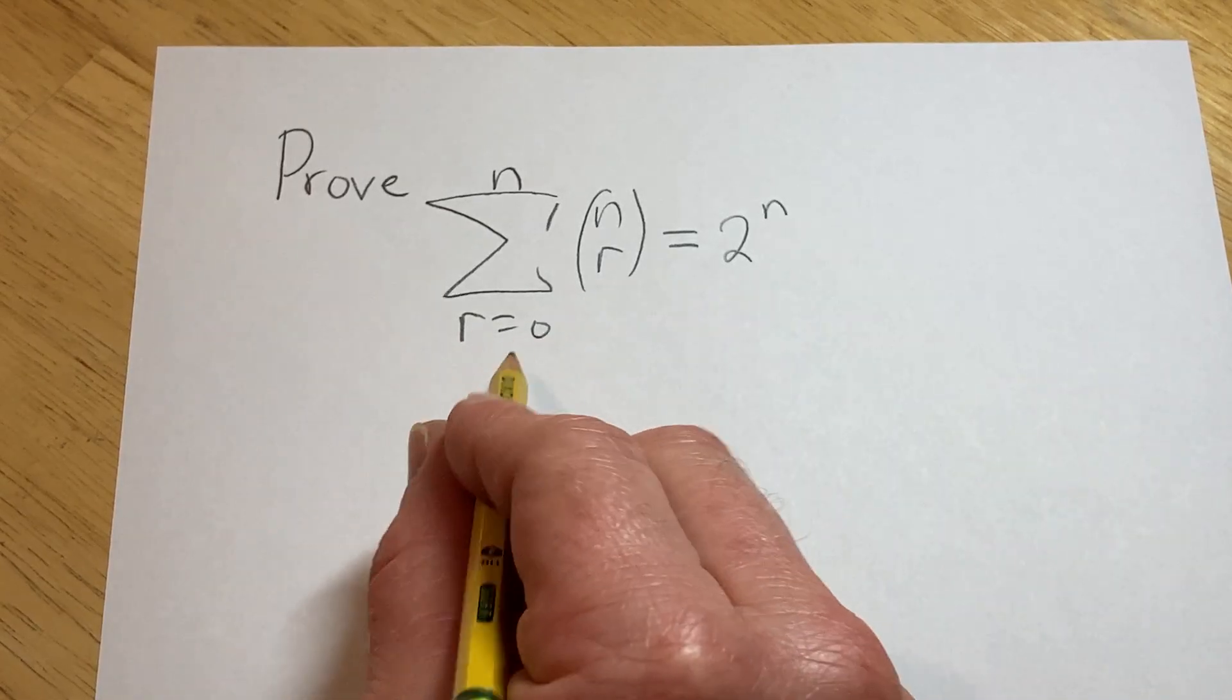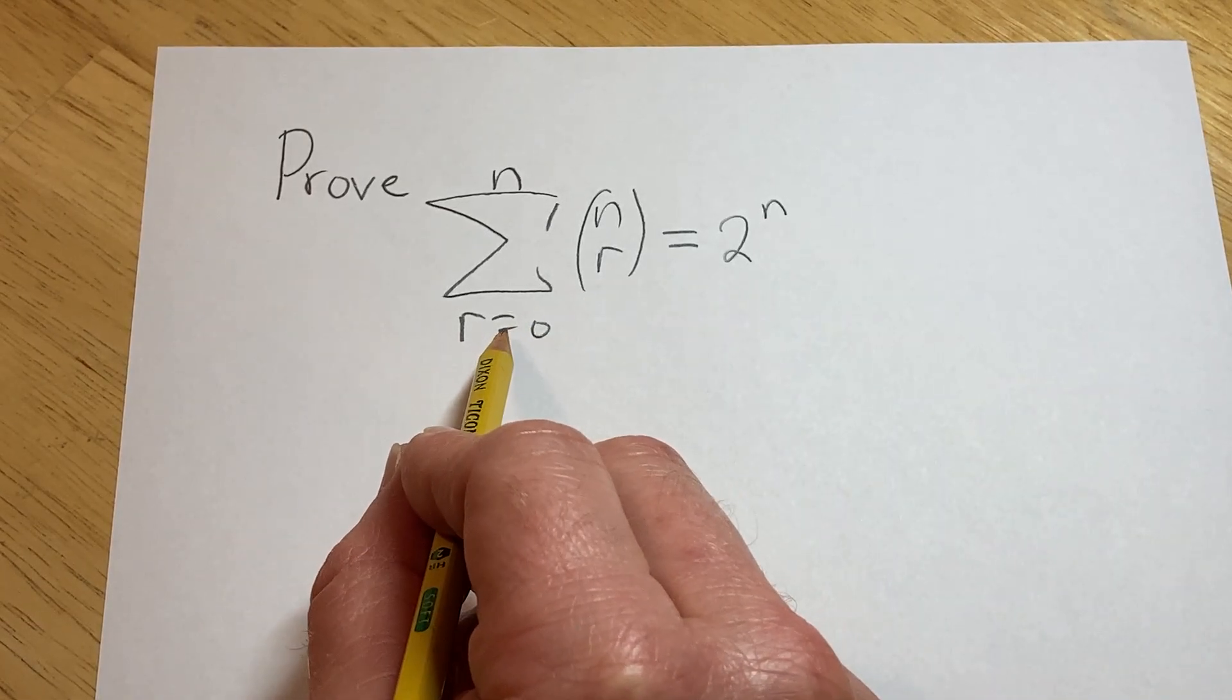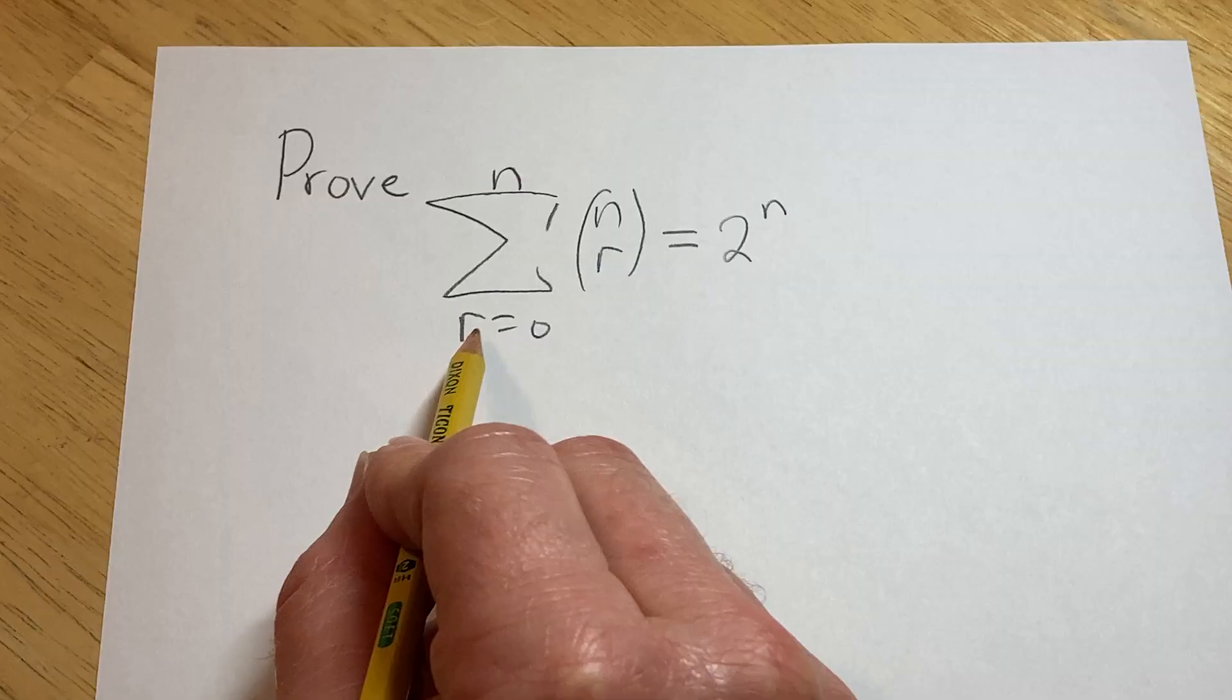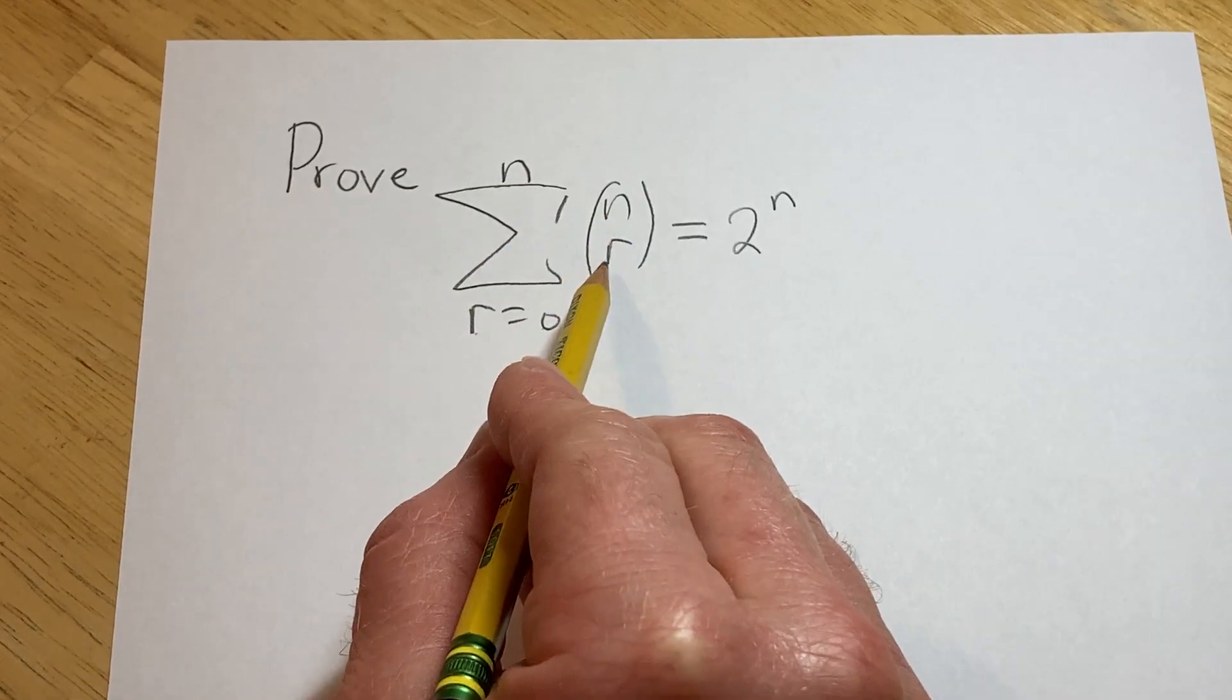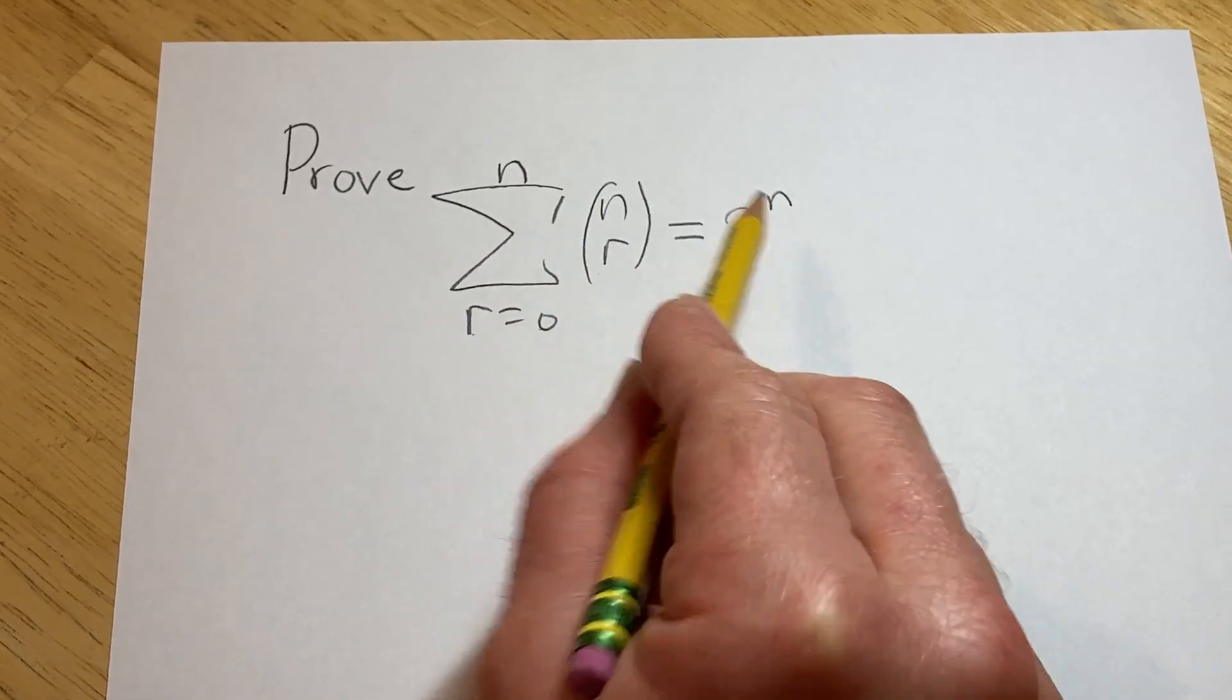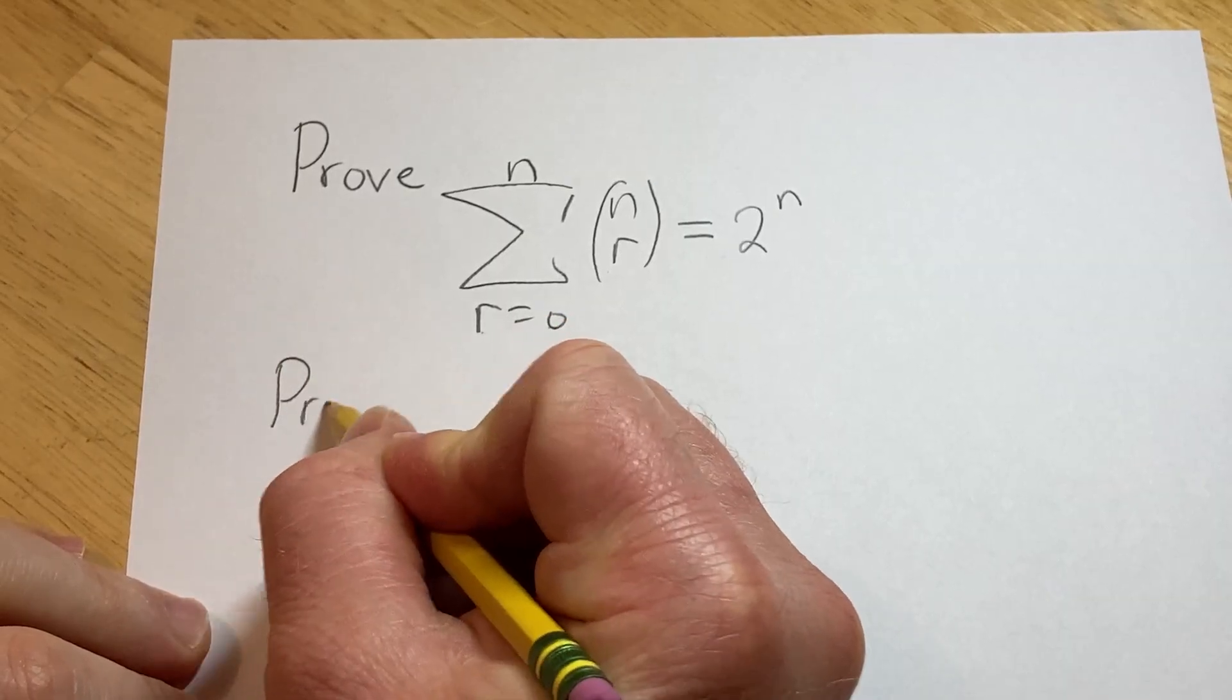Hi, in this video we're going to do a simple proof. We have to prove that the sum as r runs from 0 to n of n choose r is equal to 2 to the n. So let's go ahead and try to work through it.